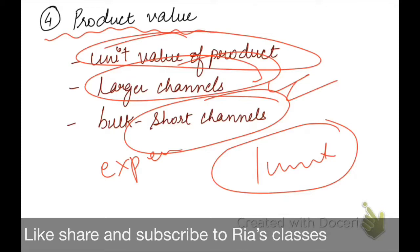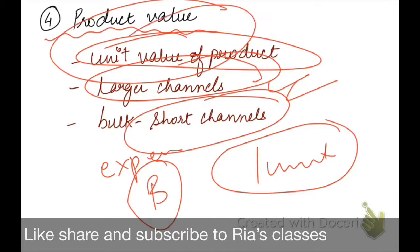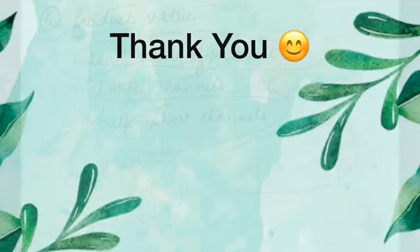So we have seen four aspects of product consideration: whether our product is perishable, bulky or lightweight, technically sophisticated or simple, and finally the product value. Based on all these aspects, we decide whether to prefer a long channel or a short channel for the distribution of our product. Thank you so much for watching — like, share, and subscribe to Riyas Classes. Thank you and bye bye.